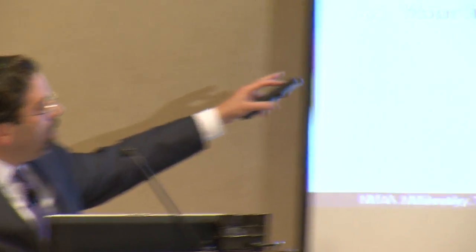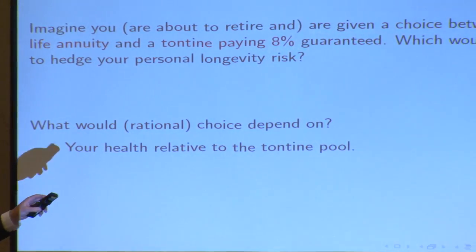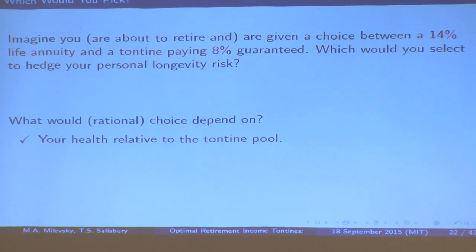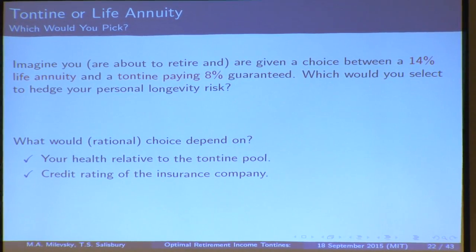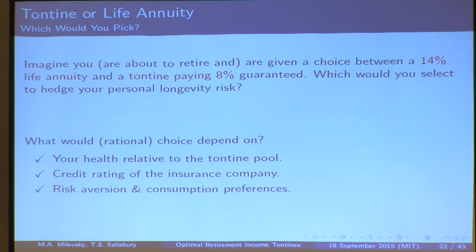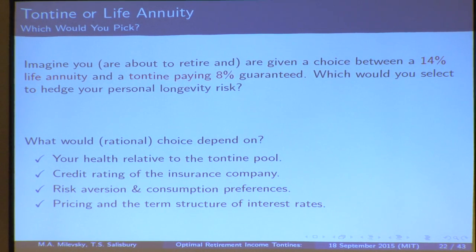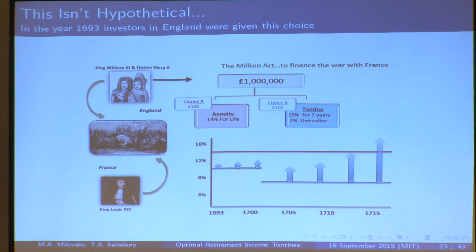What would this choice depend on? Well, you'd ask: who am I playing with? Who's in my pool? Marathon runners, much healthier than me — then I'll take the annuity. What's the credit rating of the insurance company standing behind the annuity? All of these things — risk aversion, consumption preference, intertemporal elasticity of substitution, discount rates, the term structure of interest rates — are going to be important. Historically, people had this choice. In the year 1693, about five years after the Glorious Revolution, William of Orange came to England as King William III and needed money to fight Louis XIV.